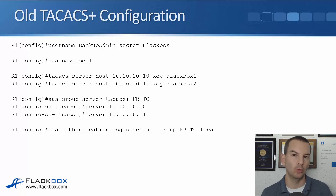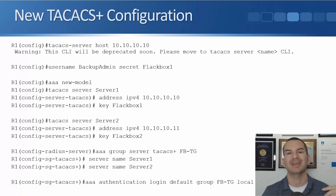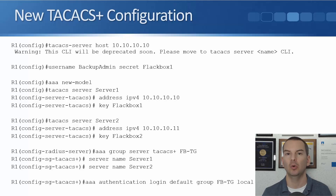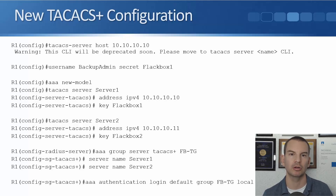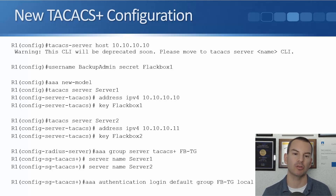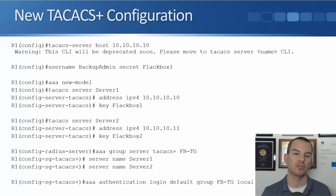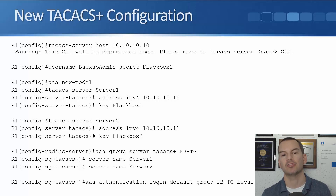Just like RADIUS, TACACS+ also has a new configuration syntax. If you use the old 'tacacs-server host 10.10.10.10' command, it will give a deprecation warning. The new syntax: 'username backup_admin secret flackbox1' for the backup user, 'aaa new-model', then 'tacacs server server1' with 'address ipv4 10.10.10.10' and 'key flackbox1'. Repeat for 'tacacs server server2' with its IP address. Then 'aaa group server tacacs+ FBTG', specify 'server-name server1' and 'server-name server2'. Finally, 'aaa authentication login default group FBTG local' — first choice is the group FBTG, second choice is local.